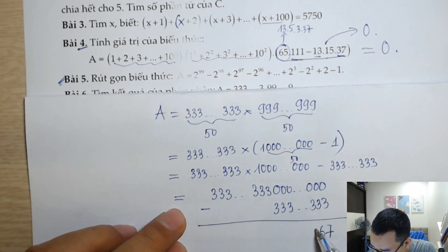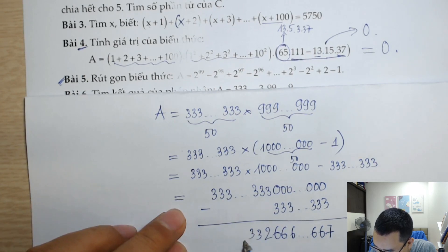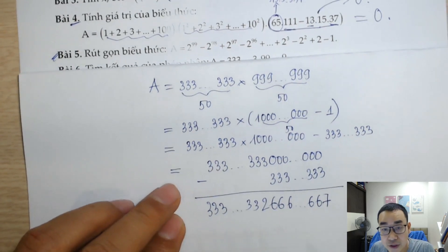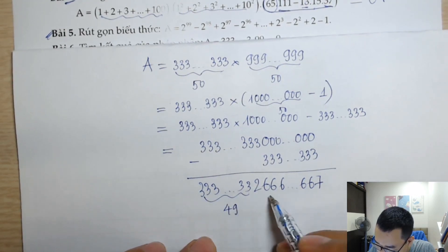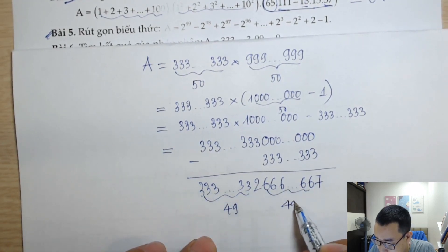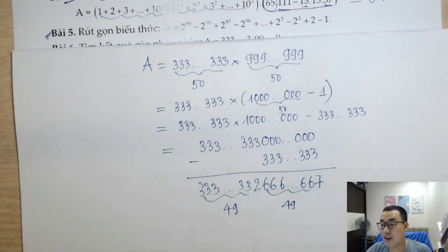Cái này sẽ bằng 766...666233...333. Chỗ này chúng ta sẽ có 49 chữ số 3, chỗ này là 49 chữ số 6. Rồi, xong rồi.